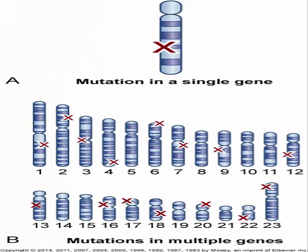X-linked recessive disorders are caused by a mutation on an X chromosome and usually affect men, because women who carry the mutated gene on one X chromosome have another X chromosome to compensate. Women who carry the mutated gene can transmit it to their offspring, and it is possible for women to have an X-linked recessive disorder when an affected male mates with an unaffected female carrier. This points to the importance of testing the carrier status of the female partner of affected males. Examples are color blindness, hemophilia, and male pattern baldness. Because hemophilia is caused by a mutation of the X chromosome, all female children of a man with hemophilia are carriers and can transmit the gene to their offspring. Sons of a man with hemophilia will not have the disorder because hemophilia is caused by a single genetic mutation and is not a multifactorial inherited condition.